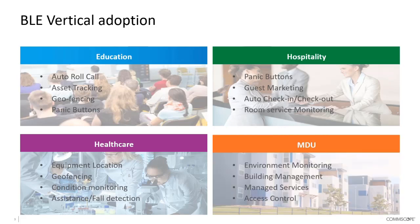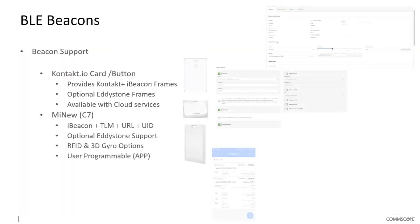In an MDU environment, BLE supports building and environment monitoring, managed services data gathering, and environmental conditions such as temperature, humidity, and CO2. Asset tracking is also applicable. Additionally, BLE enables access control — a range of door locks use Bluetooth, allowing them to be connected to a controller to provide access control over a BLE network.